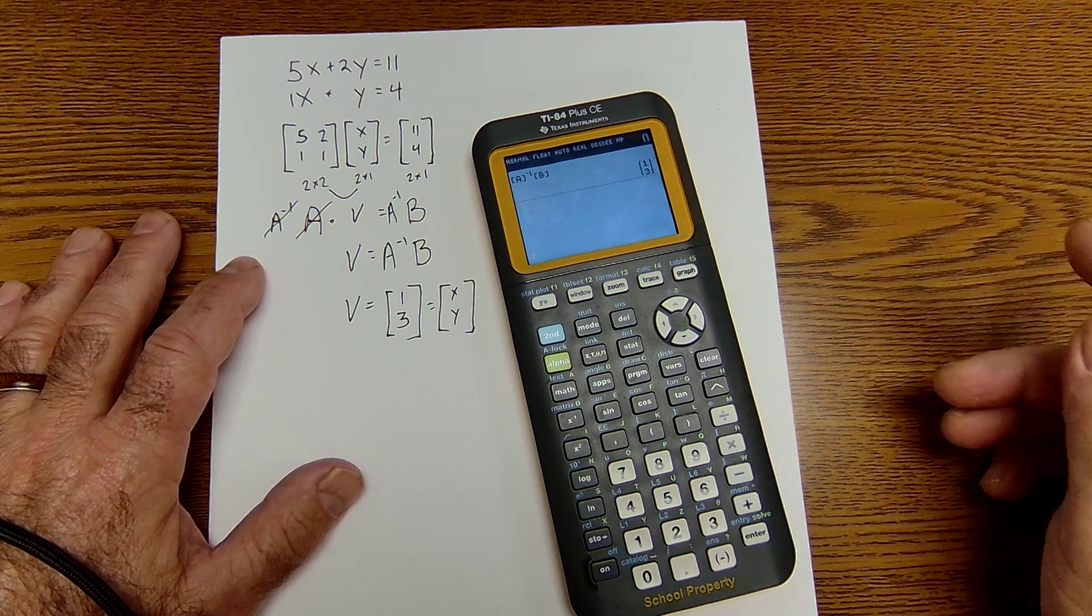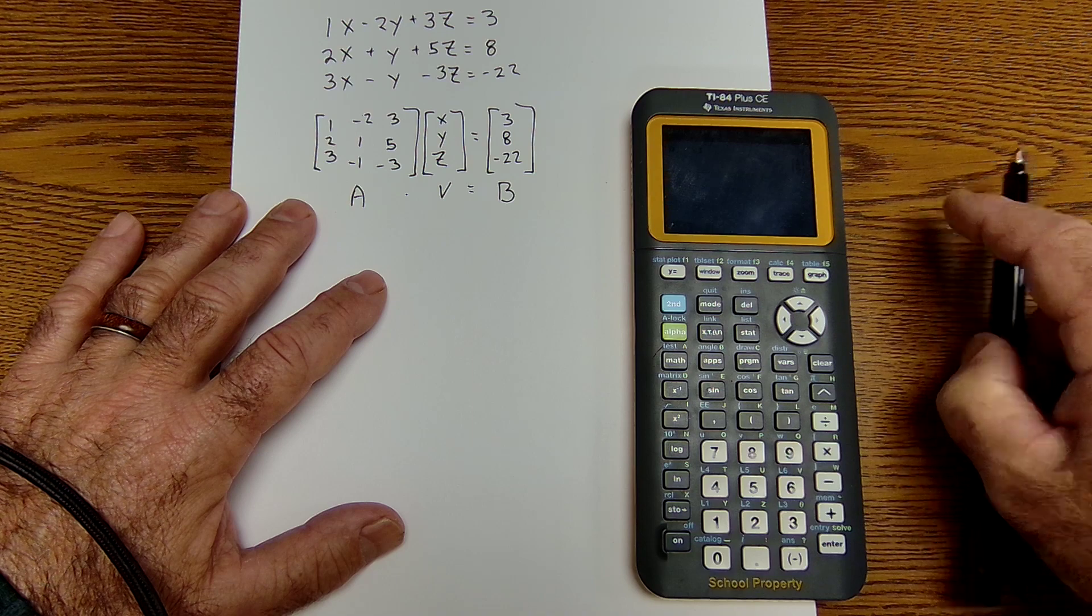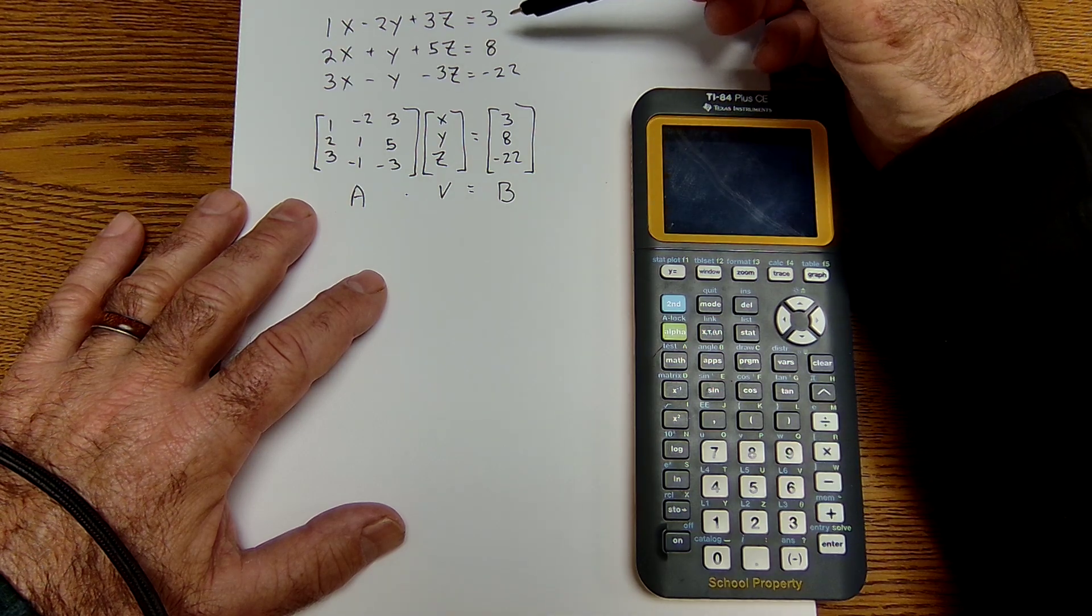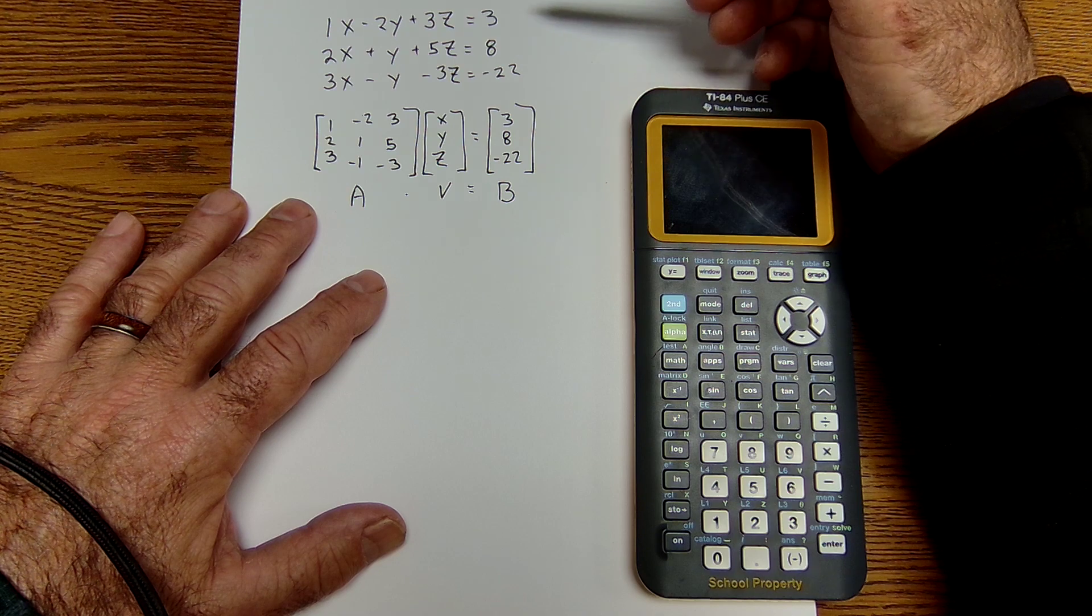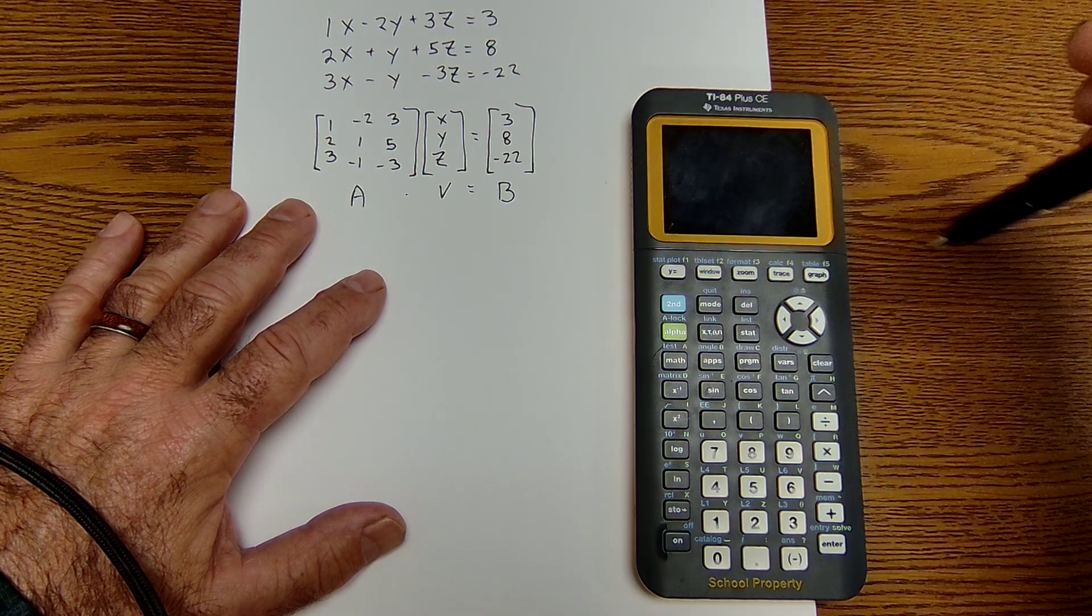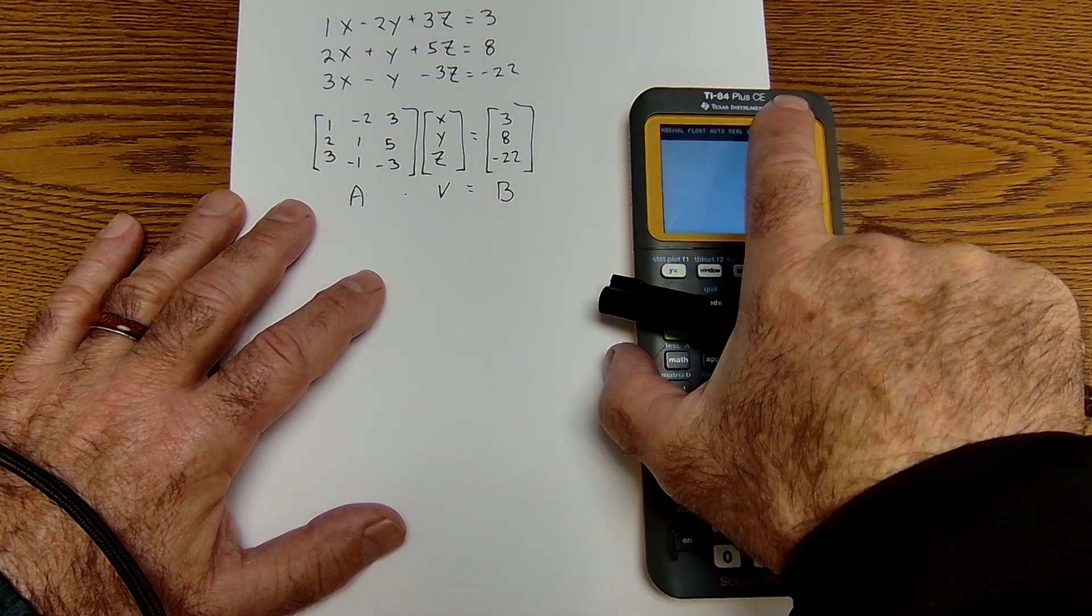Let me go ahead and do a 3 by 3 as well. So now I have 3 variables, 3 equations. Here are my 3 equations right here. I'm going to pause the video and solve this system of equations using technology, using the TI, and then watch how I do it.